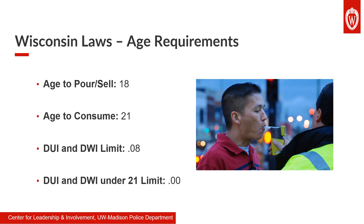While there are university policies for RSOs to follow at events with alcohol, there are also various state laws that limit alcohol sales and service. The age to pour or sell alcohol is 18. The age to consume alcohol is 21. The DUI and DWI blood alcohol content (BAC) limit is 0.08. The DUI and DWI BAC limit under the age of 21 is 0.00. The consumption of alcohol by those under 21 is always prohibited, but there are also limits placed on those of age who consume alcohol and operate motor vehicles. Please make sure to monitor the status of guests at your event and prevent alcohol consumption by those who are intoxicated or becoming inebriated.